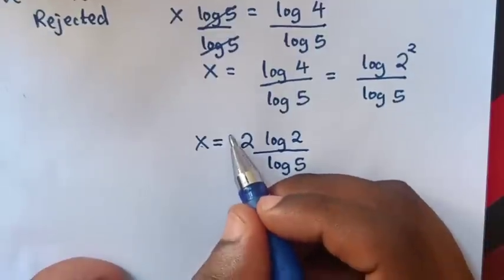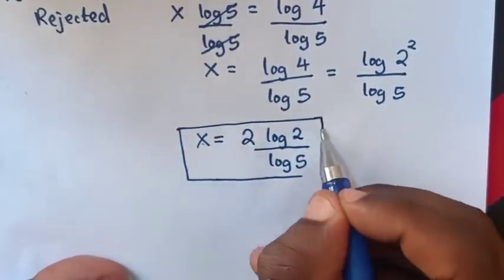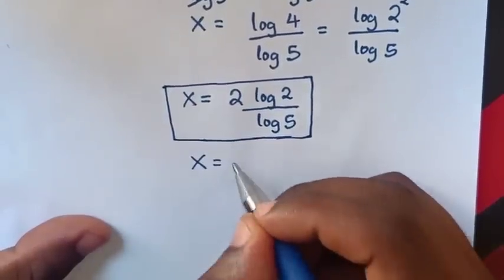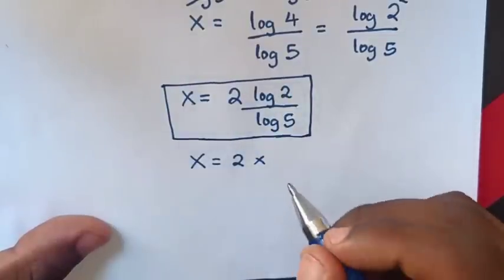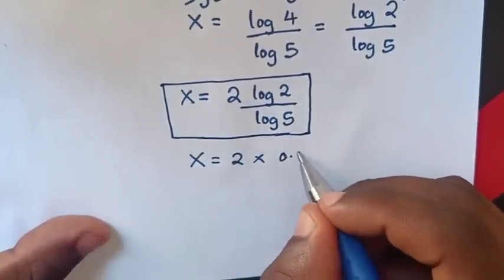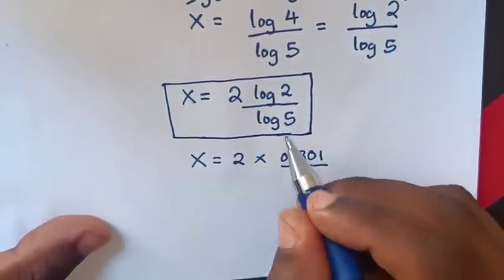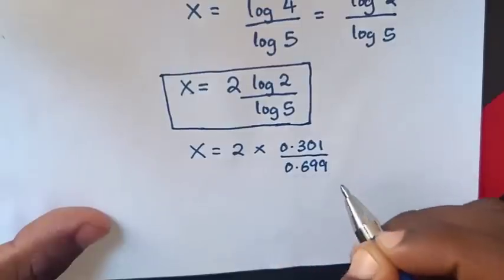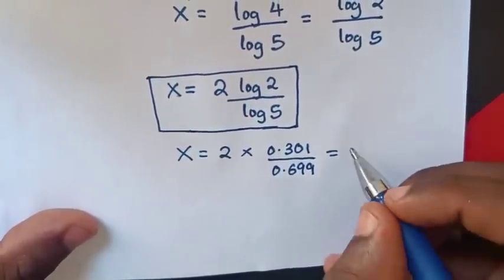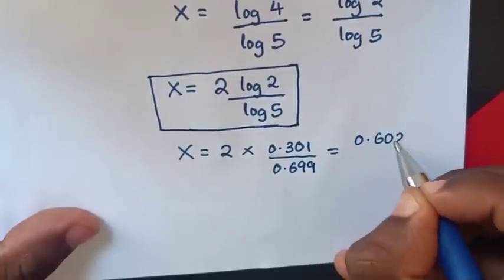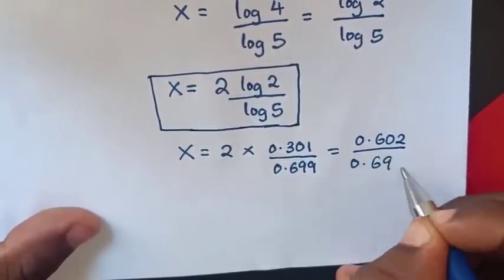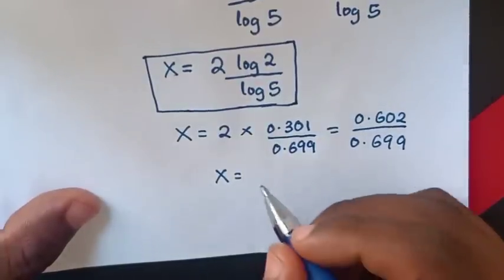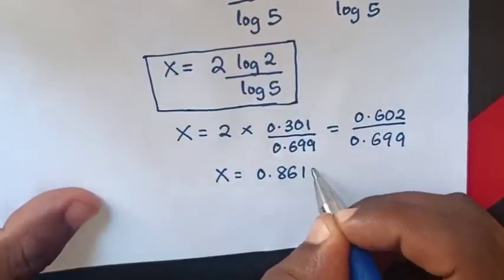This can be the final answer in terms of logarithm. Or using a calculator: x equals 2 times log 2, which is 0.301, over log 5, which is 0.699. This gives 0.602 over 0.699, so x equals approximately 0.8612.